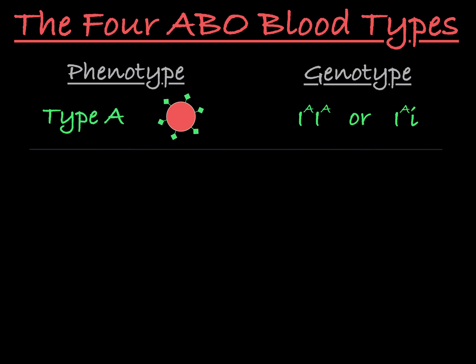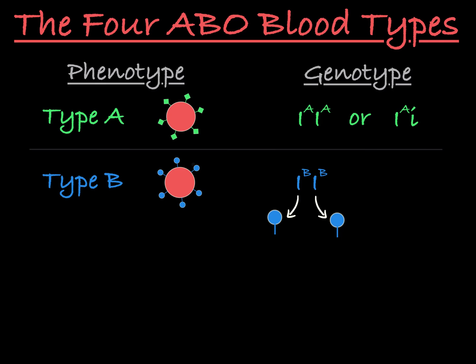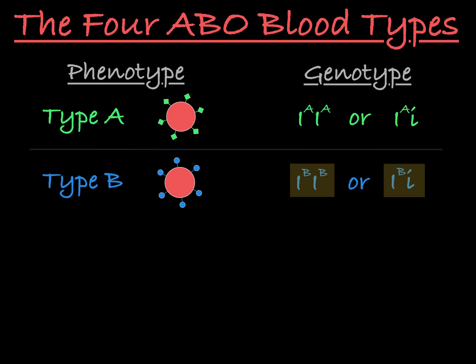The same holds true for someone with type B blood. Type B blood contains red blood cells with only type B antigens on their membranes. A person who is homozygous IB will only produce type B antigens and will therefore have type B blood. A person who is heterozygous, containing one IB allele and one little i allele, will produce the enzyme that makes type B antigens from the IB allele. Both of these genotypes result in the phenotype of type B blood, and the IB allele is dominant to little i.